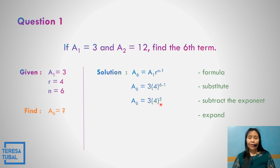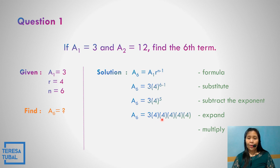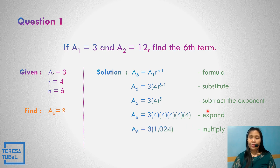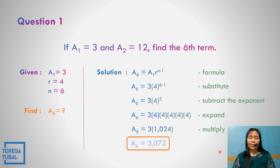So that becomes 3 times 4 raised to the fifth power. We need to expand 4 to the fifth — not 4 times 5, but 4 multiplied 5 times: 4 times 4 is 16, 16 times 4 is 64, 64 times 4 is 256, 256 times 4 is 1024. So the sixth term is 3 times 1024, which equals 3,072.